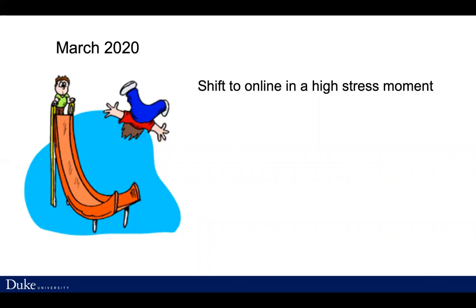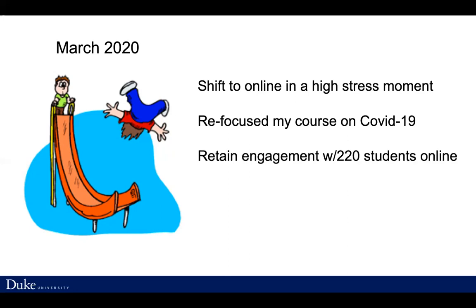Like all of us, I had to come up with new things while shifting to online in a high-stress moment. I refocused my course on COVID-19 — not hard, it's an emerging diseases class. I hope it is the one time in my life where I get to teach about an acute pandemic from the middle of it. I wanted to figure out how to retain engagement with my 220 students online, keep the emotional connectivity we had created in the first third of the class, and mostly I wanted to create stress relief. Students were living in many places being deeply impacted by coronavirus, and none of them knew when they would be able to come back to campus.